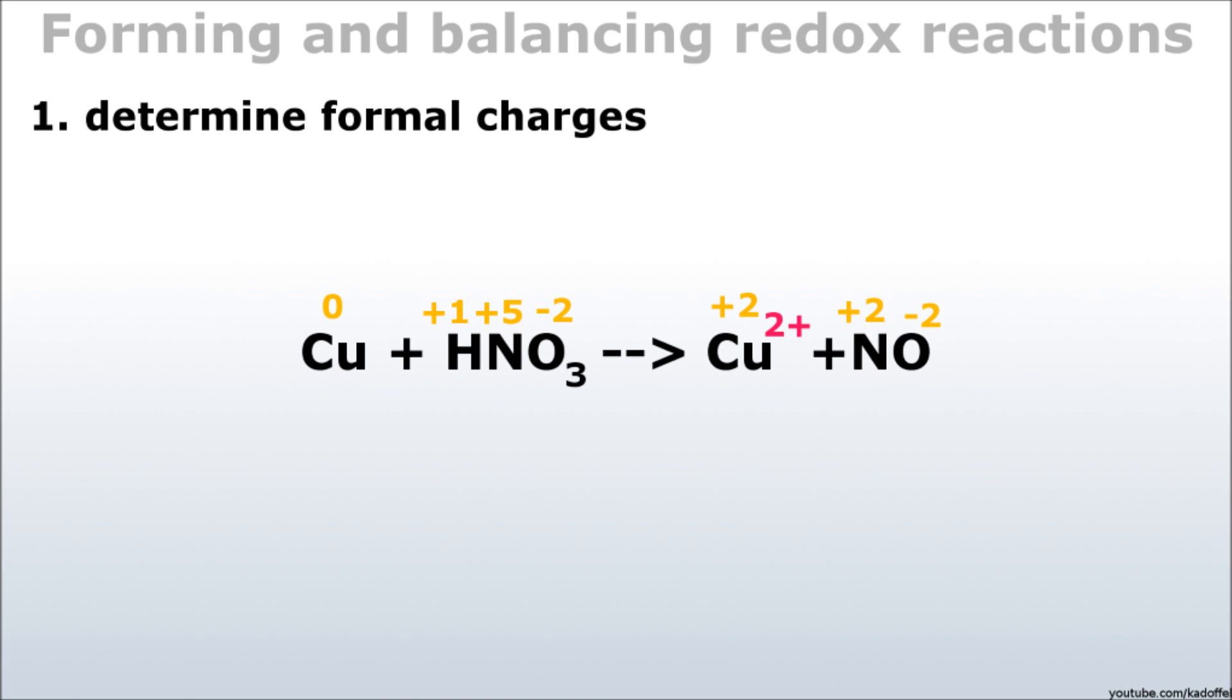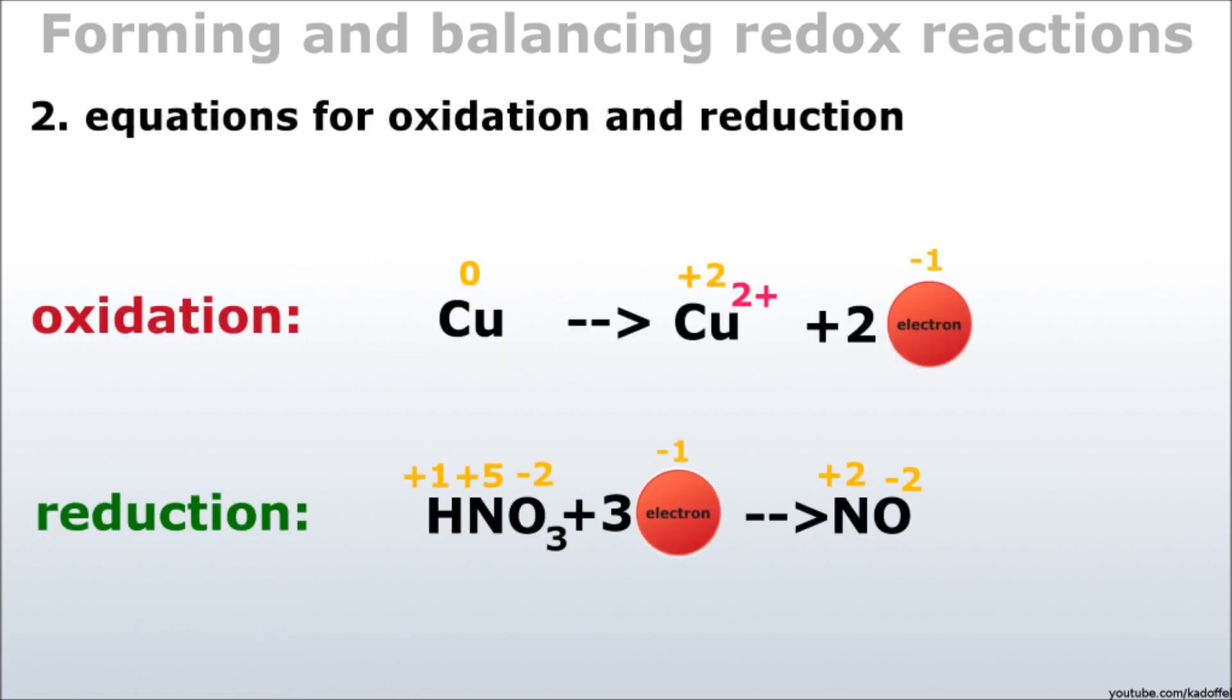We are continuing with step two. This step is about forming the equations for oxidation and reduction. The oxidation number of copper changes from zero to plus two. Therefore, it loses two electrons. This is an oxidation. The oxidation number of nitrogen changes from plus five to plus two. Therefore, it gains three electrons. This is a reduction.